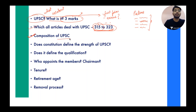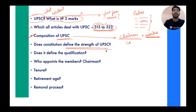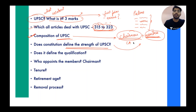Next, we will look at the composition — how the Union Public Service Commission is composed, how it is formed. You need to see who the Chairman is and how many members there are. You should know who the current Chairman is, as it can become a current affairs question. Regarding the number of members, you should know what provision the Constitution gives — does the Constitution define any strength for UPSC, like 10, 15, or 5 members?